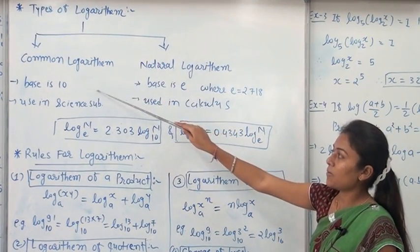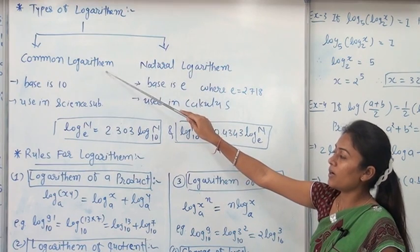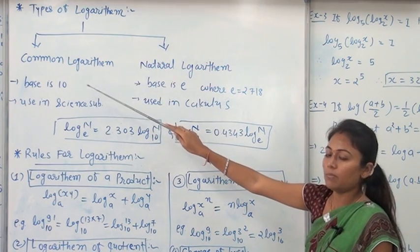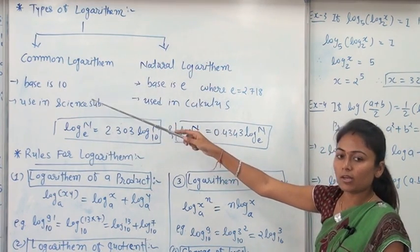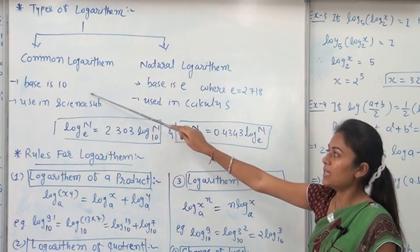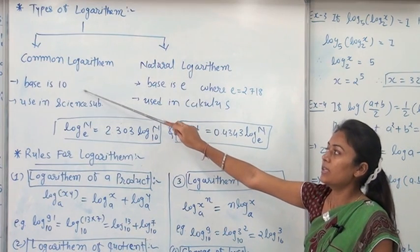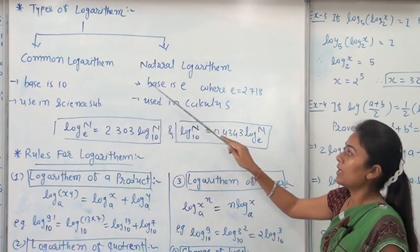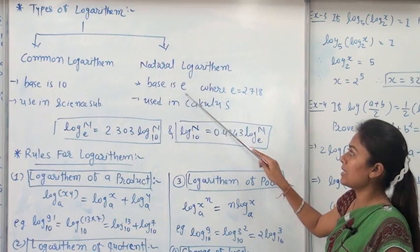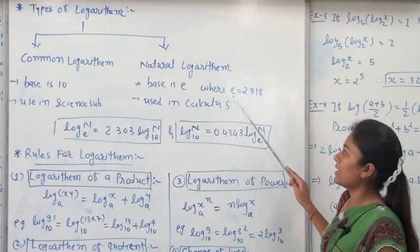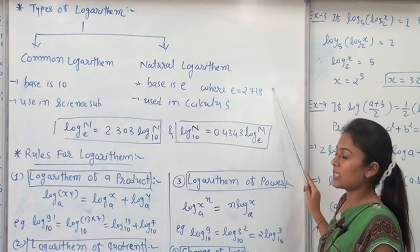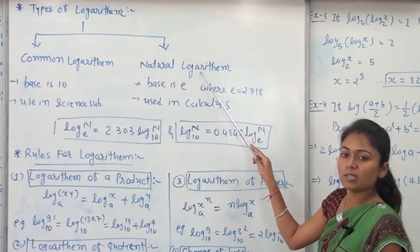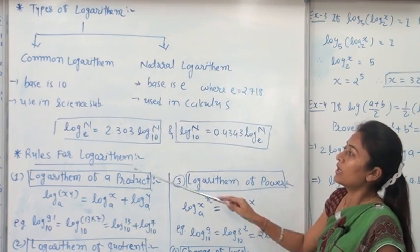For common logarithm, the base is 10. That means if any logarithm has base 10, it is known as a common logarithm. If the base is E, where E equals approximately 2.718, then the logarithm is known as natural logarithm.